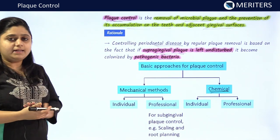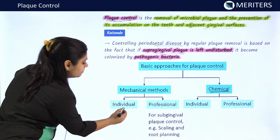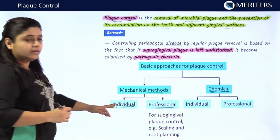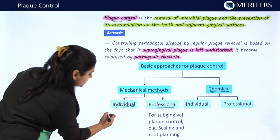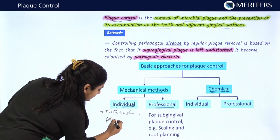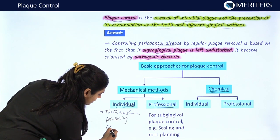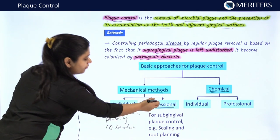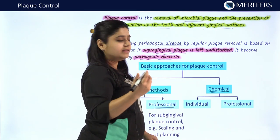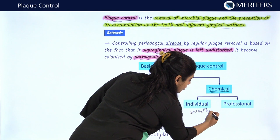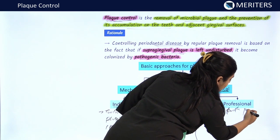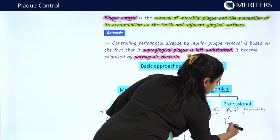In mechanical methods, plaque control can be done by an individual — the patient himself — and professionally by the doctor. Individual mechanical plaque control methods include tooth brushing, flossing, and interdental brushes. Professionally, plaque can be removed by hand instruments and ultrasonic instruments. Chemical plaque control by individuals involves use of mouthwash, and professionally by tooth pumicing and polishing.